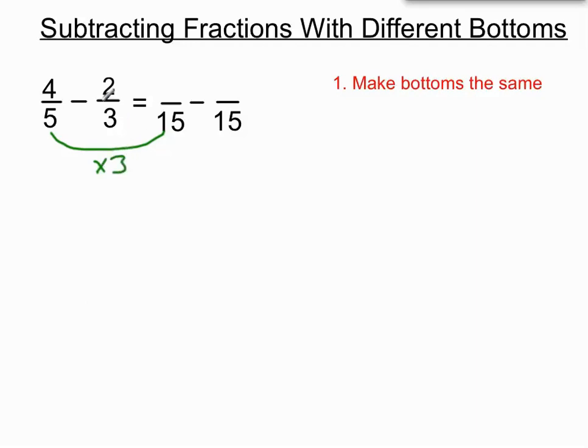What have we done to that 5 to make 15? We've multiplied by 3. The rule is whatever you do to the bottom you've got to do to the top in terms of multiplies and divides. So if we times 3 on the top as well, 4 times 3 should make 12 there. Yep, it does.